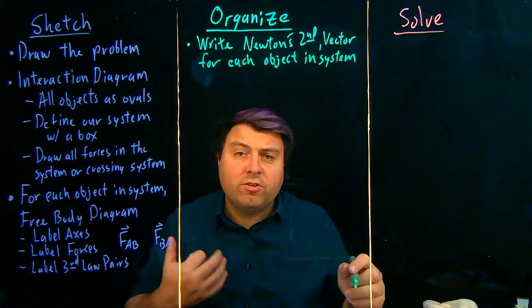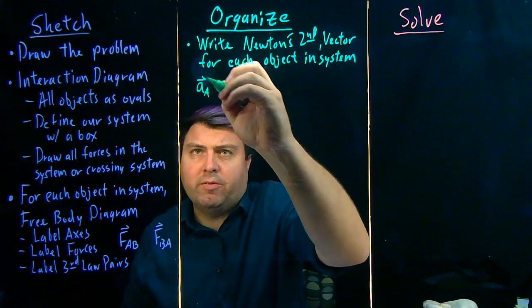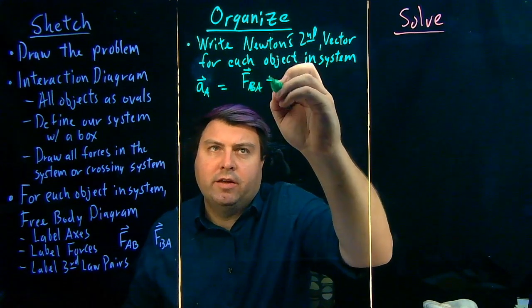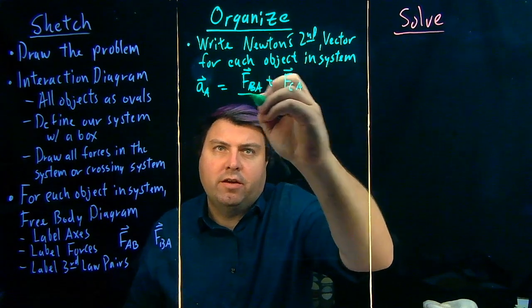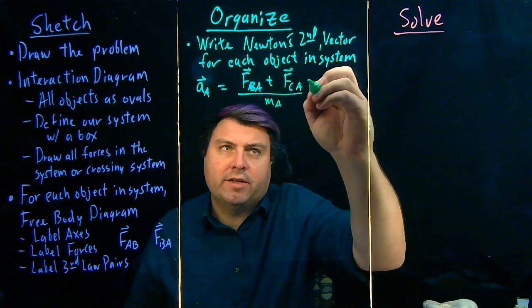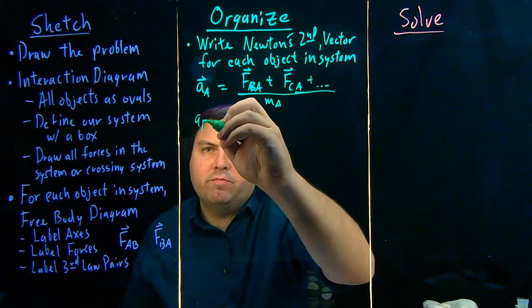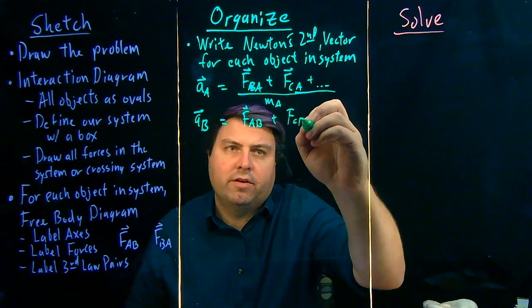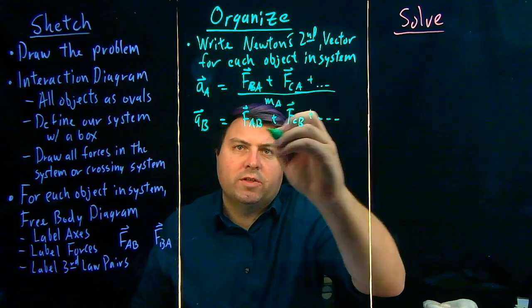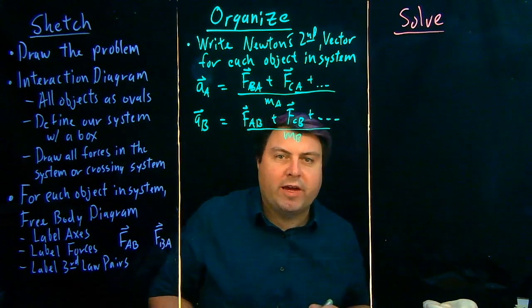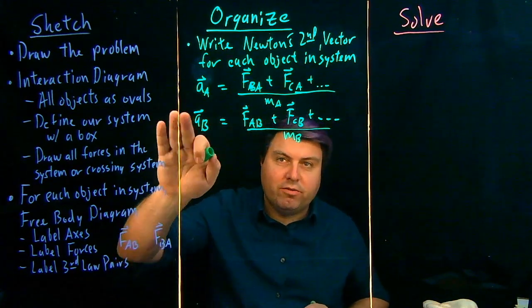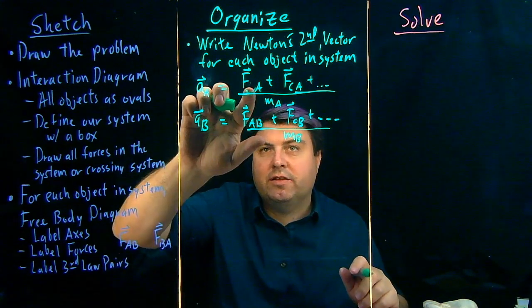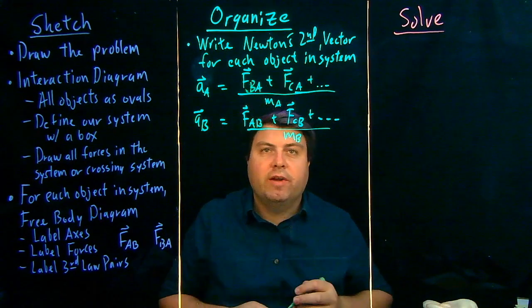If we have two objects in our system, our second law would look like A sub A equals FBA plus FCA over the mass of A. And then A of B is going to look like FAB plus FCB plus others over the mass of B. So we want to just write out all the forces, and we can see pretty quickly from here that as long as I write things nicely, we have something like this.